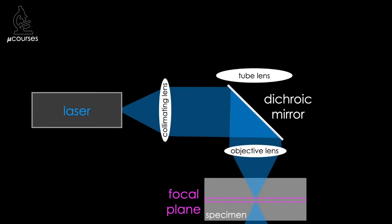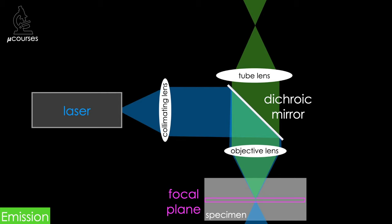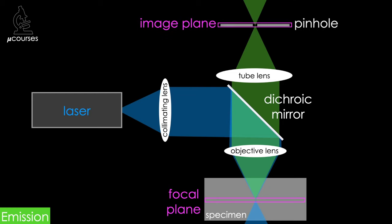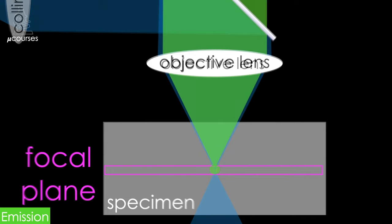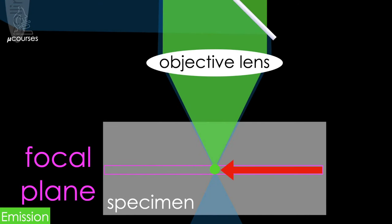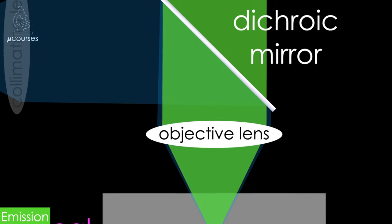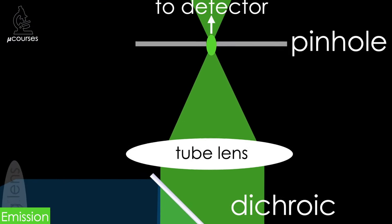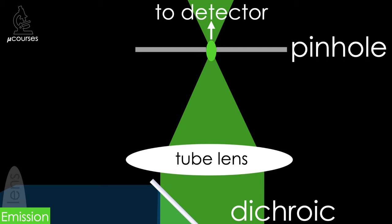Let's go back to our simple diagram of a confocal and look now at the emission light path — the light emitted by the fluorophore in our sample. The image of the sample is focused onto a plane within the microscope called the image plane, and the pinhole resides at this image plane. Fluorescence emitted by objects in the focal plane of the objective lens is collected by the objective lens, passes through the dichroic mirror, and is focused by the tube lens onto the image plane. The pinhole is positioned such that this focused image can pass through to the detector, which collects the emission light photons and is used to generate a digital image of the sample.